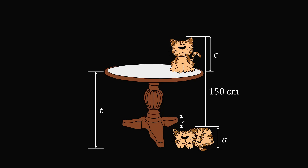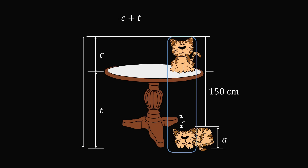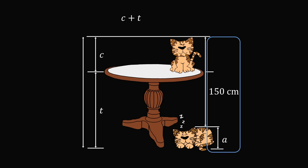Now it would be useful to relate these unknowns to each other. Here's a clever trick: let's consider the height from the floor to the top of the sitting cat. If we transfer the distance of the sitting cat to the left, we can measure that height in two different ways. One way gives us c plus t on the left side. On the right side, the same distance equals 150 plus a. So we have the equation: c + t = 150 + a.